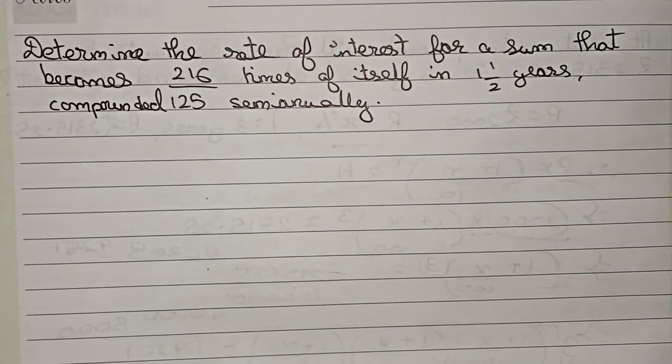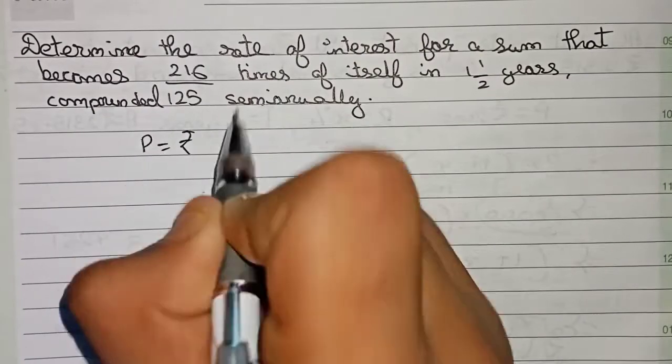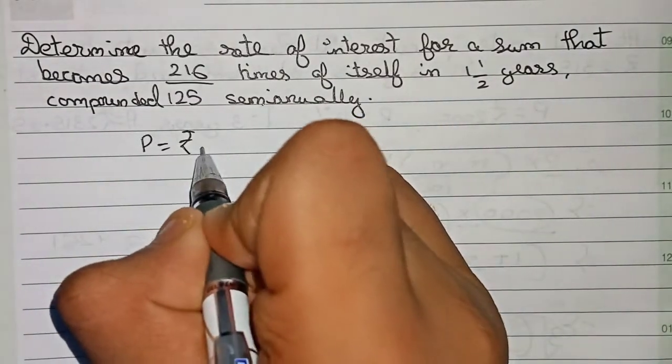As always, first you have all the information that has been given. So principle is about rupees. No principle is given, so the principle is about rupees P.